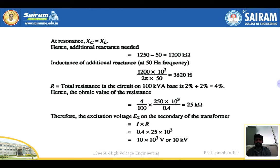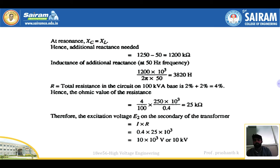At resonance, Xl equals Xc. The condition is Xl = Xc, so the additional reactance needed is 1250 minus 50, giving 1200 kilohms. This is the additional reactance required. At 50 Hz, converting to inductance gives approximately 3820 henries.